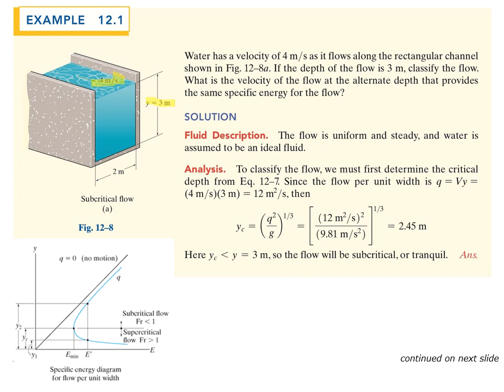Plugging into the critical depth equation, the critical depth is found to be 2.45 meters. Since the current depth of 3 meters is above the critical depth, the flow is on the upper branch of the curve — it is subcritical or tranquil. For an arbitrary depth Y, the specific energy is determined using equation 12-6. Plugging in small q and g, then Y = 3 meters, we can solve for the energy at that depth.